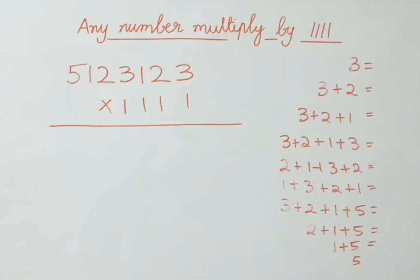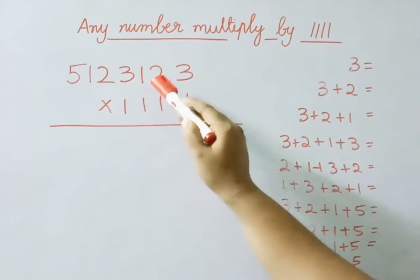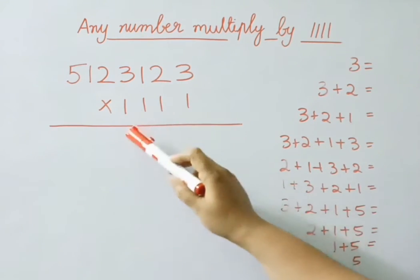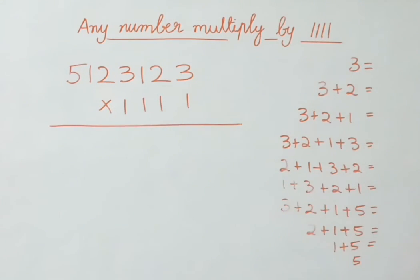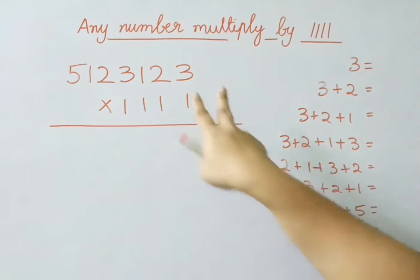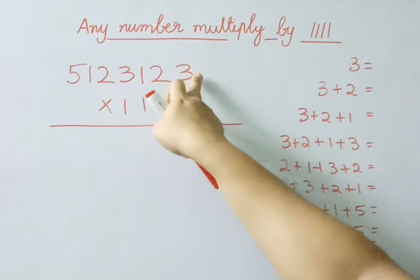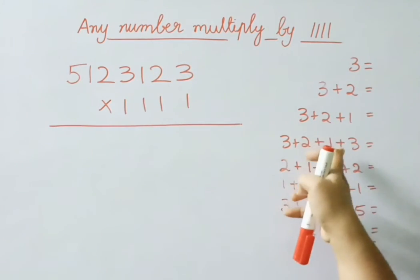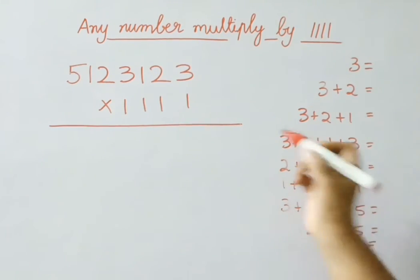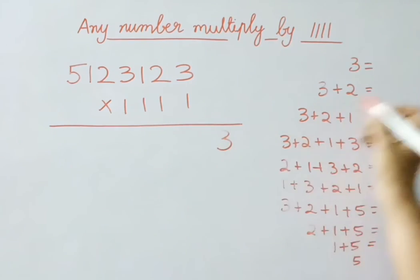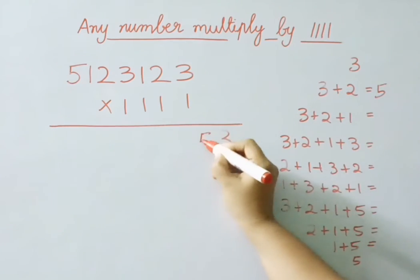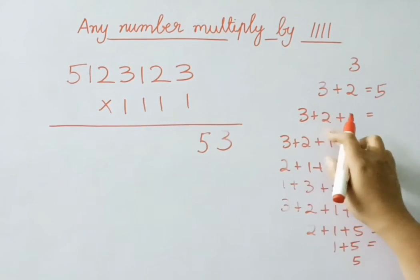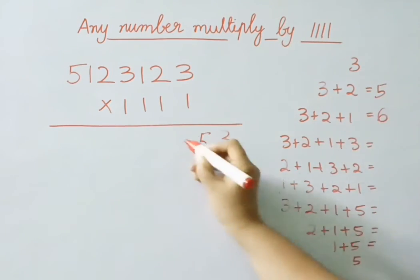See the next example: 51,23,123 multiplied by 1111. The first digit and last digit we will write the same. Then right to left we are going to add the digits — first 2 digits, then 3 digits, then 4 digits. First digit as it is: 3. Now add 3 plus 2 is 5. Next add 3 digits: 3 plus 2 is 5, 5 plus 1 is 6. Write on.